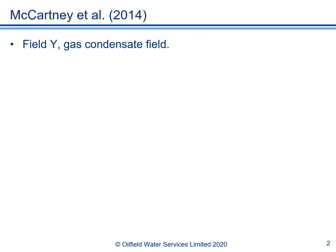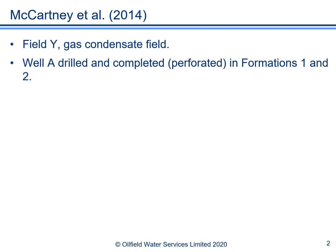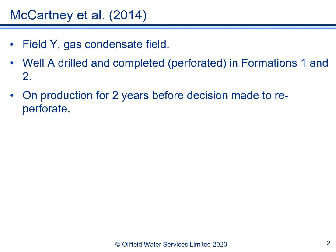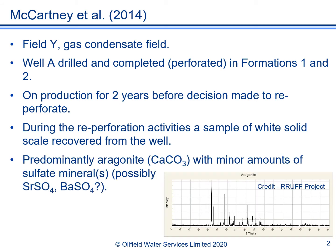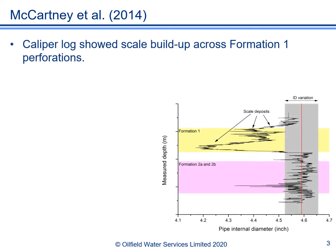This example is from a gas condensate field which we shall call Field Y. Well A on this field was a vertical well that was perforated across two formations, Formation 1 and Formation 2. After the well had been on production for two years, a decision was made to re-perforate the well. During the re-perforation activities, a sample of white solid scale was recovered from the well. Analysis showed it was predominantly aragonite with minor amounts of sulfate minerals, possibly celestite and/or barite. A caliper log run in the well showed scale build-up across the perforations of Formation 1 but not those of Formation 2, so it was inferred that the scale sample had come from the Formation 1 perforations.